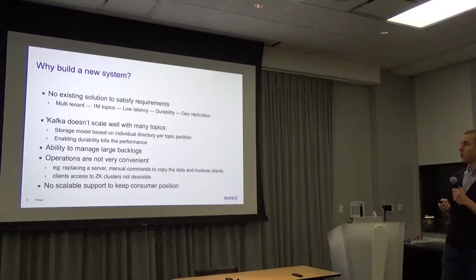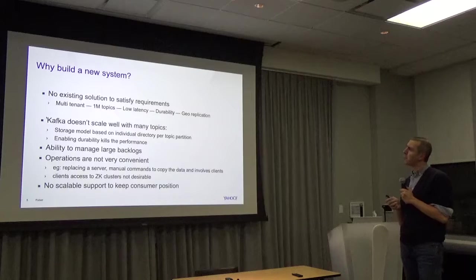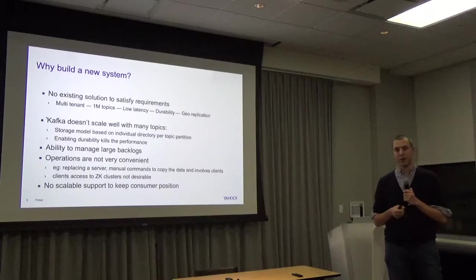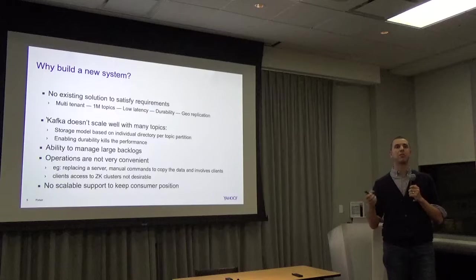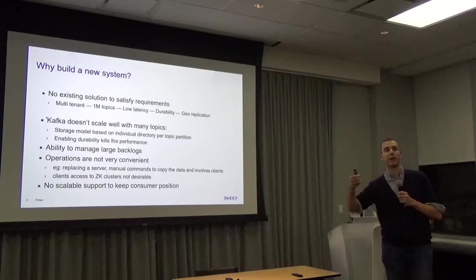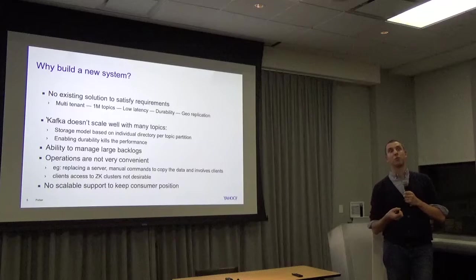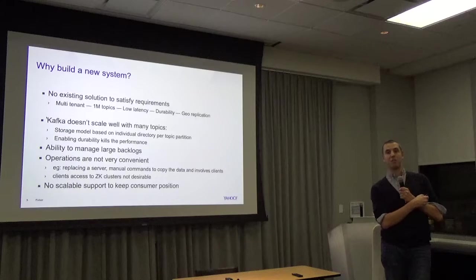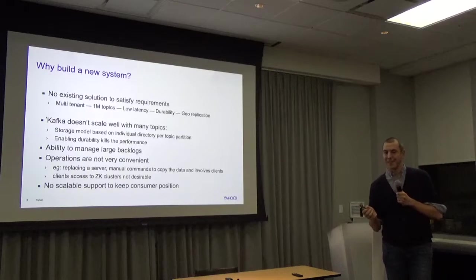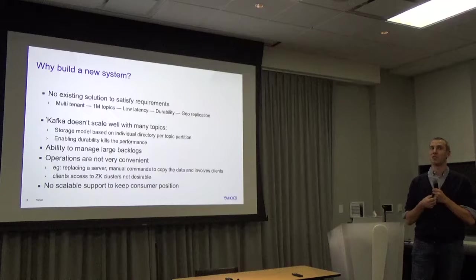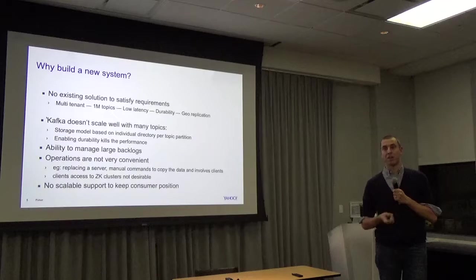We looked at Kafka, and the problem with Kafka is that it doesn't scale well with many topics. The main reason is Kafka's storage model: each topic has many partitions, each partition has its own log, which is a directory with multiple files. If you have 1 million topics, you need 1 million directories. If you want durability and sync each transaction, writing across a million directories with sync on every write means a huge amount of I/O. With HDDs that simply doesn't work, and with SSDs you will kill the SSD very quickly with all those write I/Os.